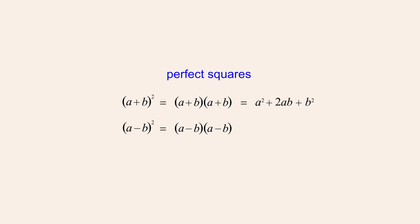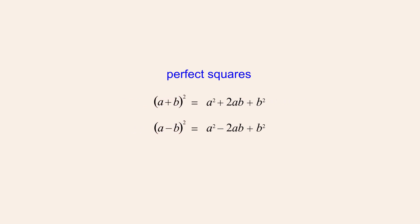Likewise, we can multiply the second pair of binomials. Multiplying the first terms gives us a-squared, then a times negative b is negative ab, negative b times a once again gives us negative ab, and negative b times negative b is b-squared. We can then combine the two negative ab terms, giving us negative 2ab. So perfect square expressions of the form a plus b quantity-squared and a minus b quantity-squared may also have the form a-squared plus 2ab plus b-squared and a-squared minus 2ab plus b-squared.